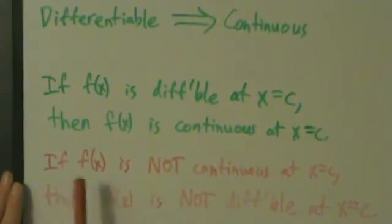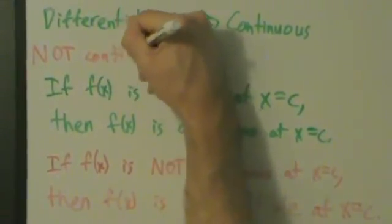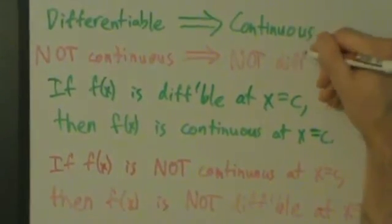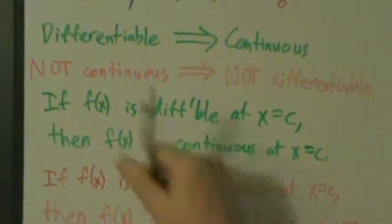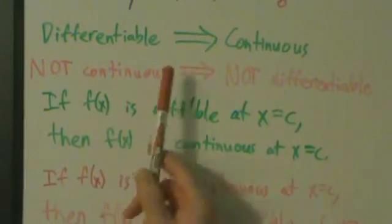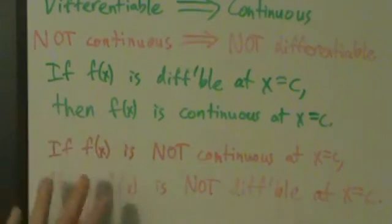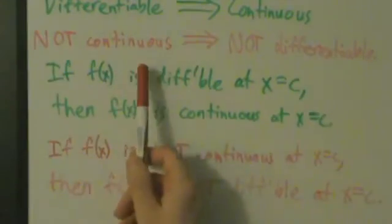If f(x) is differentiable at x equals c, then f(x) is continuous at x equals c — and there's a proof in the next video. This automatically implies that if f(x) is not continuous at x equals c, then f(x) is not differentiable at x equals c. So: not continuous automatically implies not differentiable. If you're differentiable, that tells you right away you're continuous, so if you're not continuous there's no way you could be differentiable.